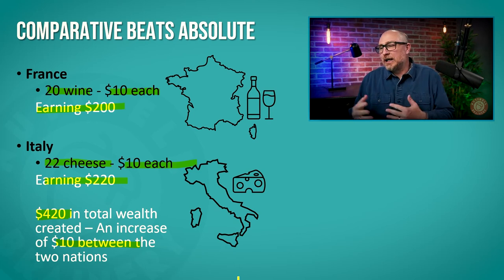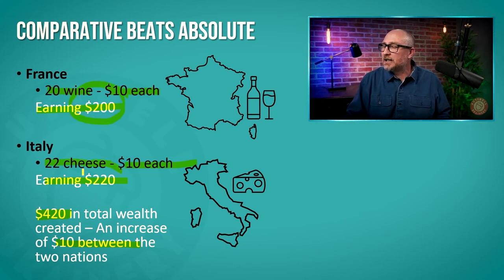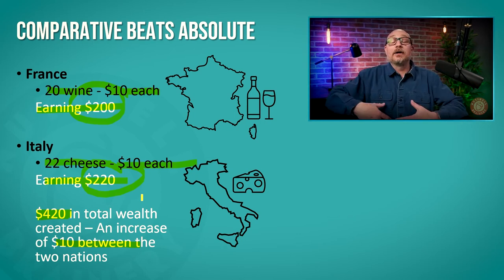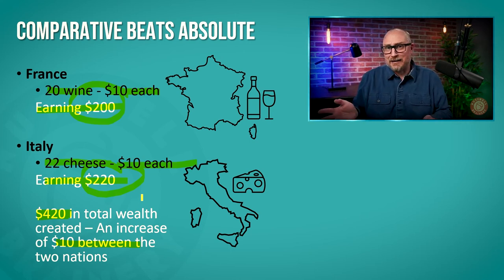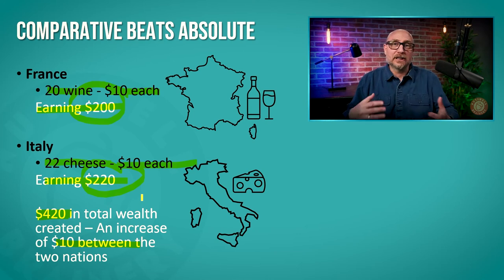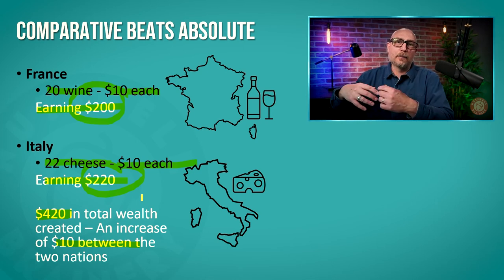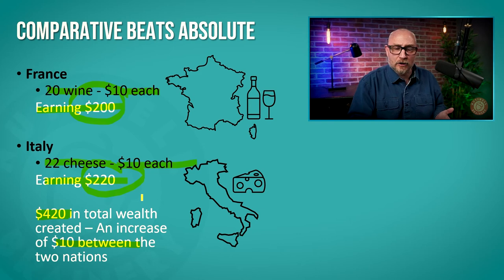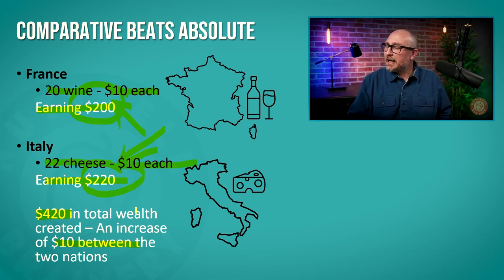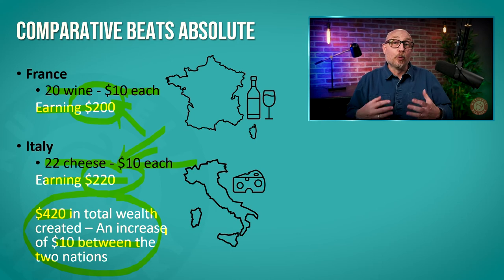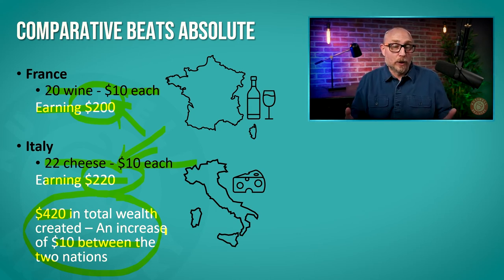Now, you might say Italy kind of took it in the shorts a little bit here. Well, in this one instance that'd be a concern, but countries are constantly improving their comparative advantage and making more in one area than another. Furthermore, France is earning a lot more than before, so they can buy more cheese, which means the cheese market would go up. The point is, comparative advantage allows wealth to grow for everyone involved.